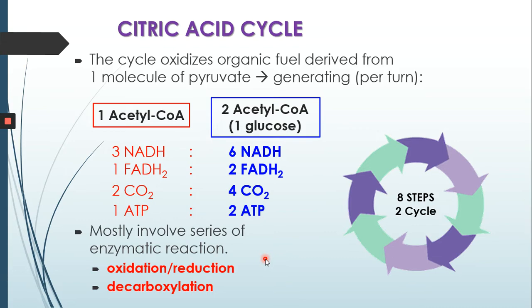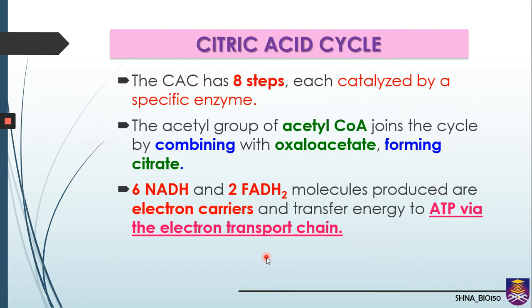Oxidation is the process of losing electrons, and reduction is the process of gaining electrons. Decarboxylation is the process of removing carbon, releasing it as carbon dioxide. The NADH and FADH2 molecules produced act as electron carriers, and they will transfer energy to form ATP via the electron transport chain in the next stage.